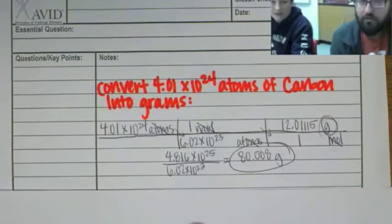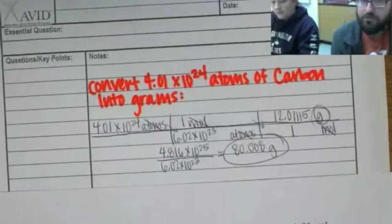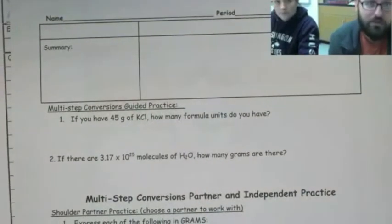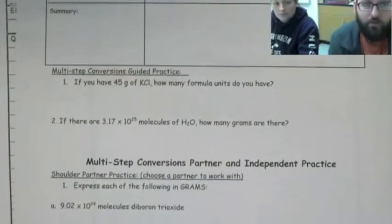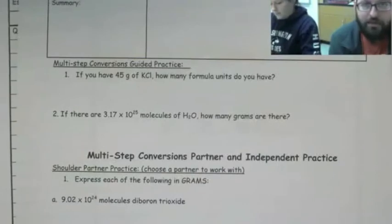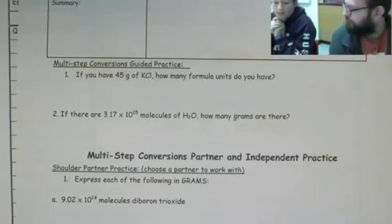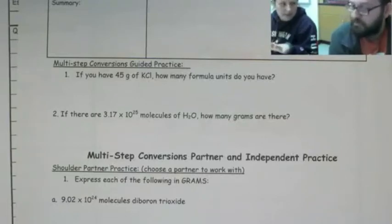Let's practice some more, okay? Okay. Let's do it. So in your packets, you've got these guided practice problems. You should see if you have 45 grams of KCl, how many formula units do you have? You know something I kind of like to do, Mr. Domboski? I like to get to the molar mass first before I set all that stuff up. That's a very good idea.